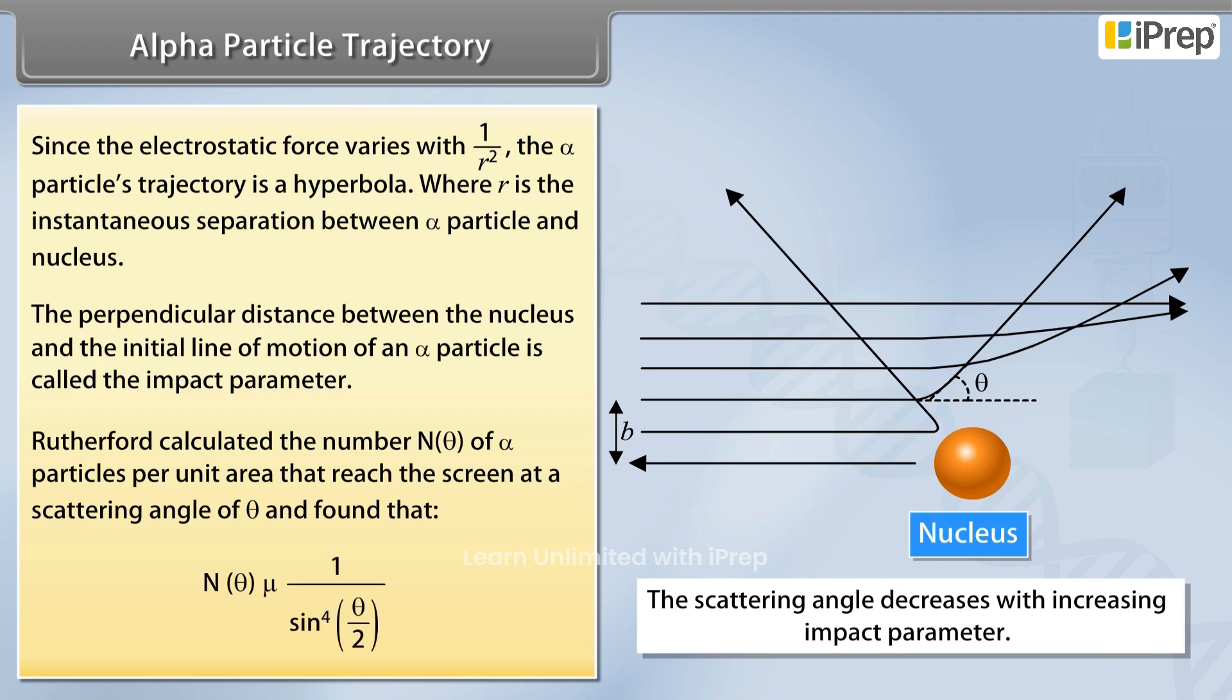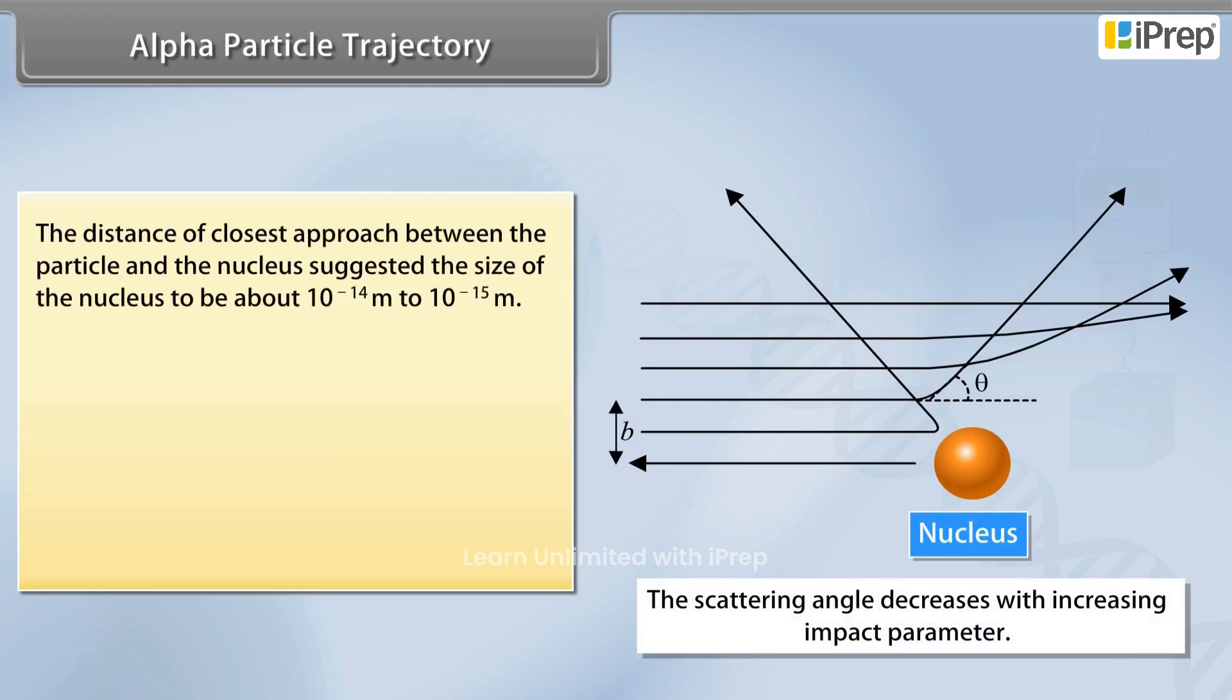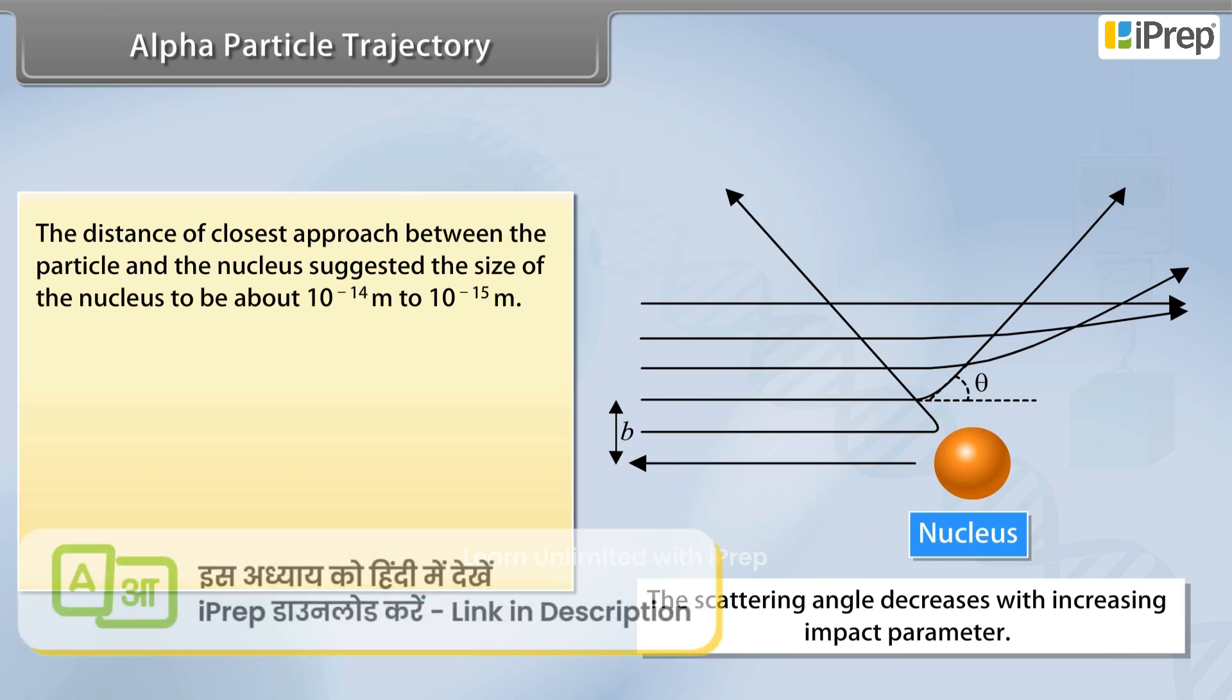The distance of closest approach between the particle and nucleus suggested the size of the nucleus to be about 10⁻¹⁴ m to 10⁻¹⁵ m.